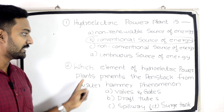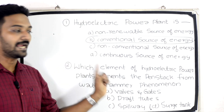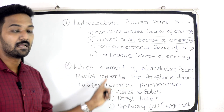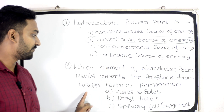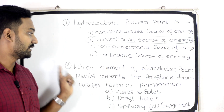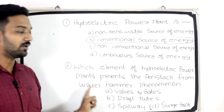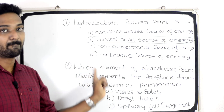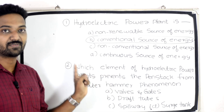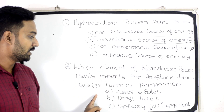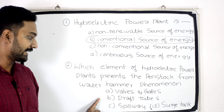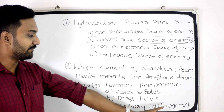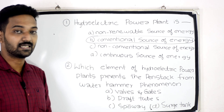Second question. Which element of hydroelectric power plants prevents the penstock from water hammer phenomenon? Option A: Vaults and Gates. Option B: Draft Tubes. Option C: Spillway. Option D: Surge Tank.